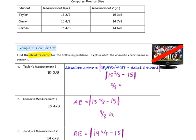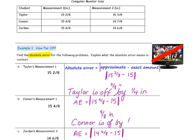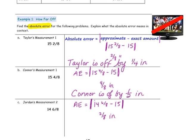Explaining what the absolute error means in context: Taylor is off by one-quarter inch, since 2-eighths simplifies to one-quarter. Connor is off by a half inch. Jordan's measurement is off by a quarter inch. Notice that Taylor and Jordan are both off by a quarter inch, but Taylor has overestimated and Jordan has underestimated.